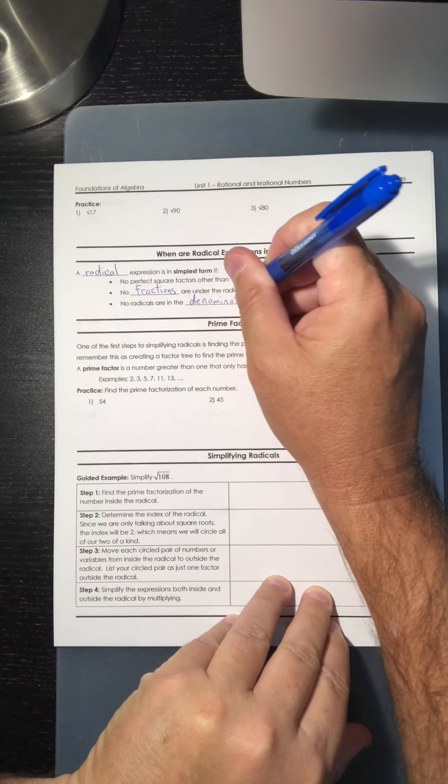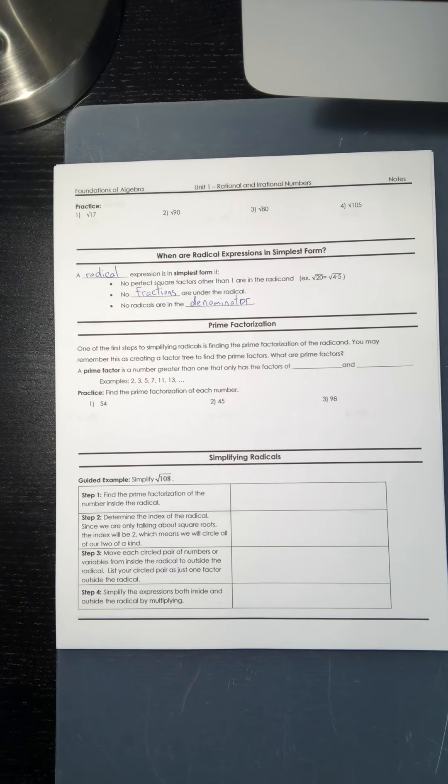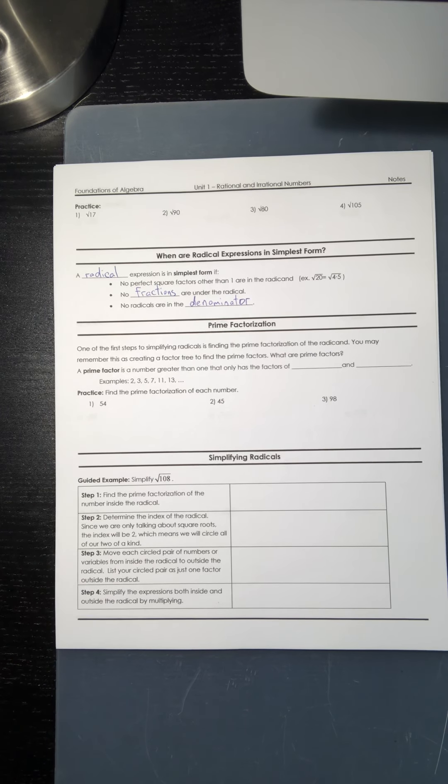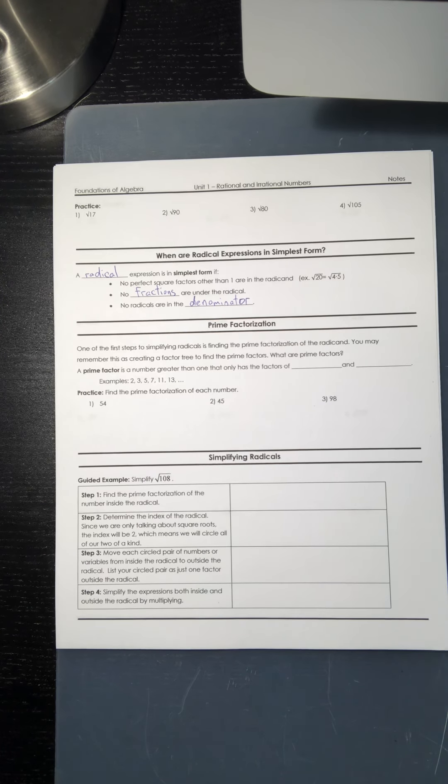And then last, no radicals are in the denominator. In case you don't remember what a denominator is, it's basically the bottom number of a fraction. We're gonna talk about this in more detail when we start doing some of these examples, so just make sure you fill in those blanks with those three words.